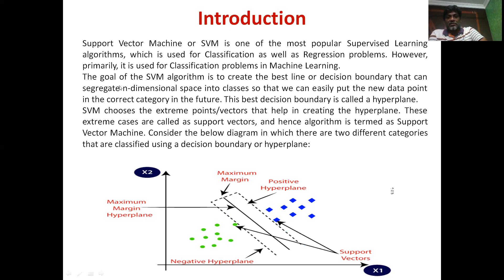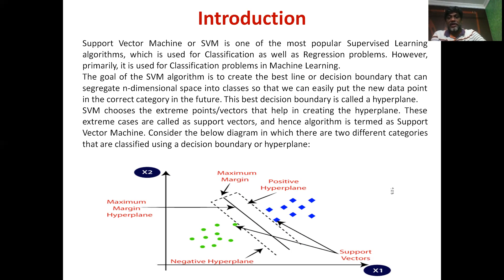The goal of the SVM algorithm is to create the best line or decision boundary that can segregate n-dimensional space into several classes. If there are two input classes, the decision boundary divides the input classes into two separate patterns. You may draw several decision boundaries that can segregate the input space into several classes, but among all those decision boundaries the best one will be identified as the optimal hyperplane, or simply the hyperplane of SVM.